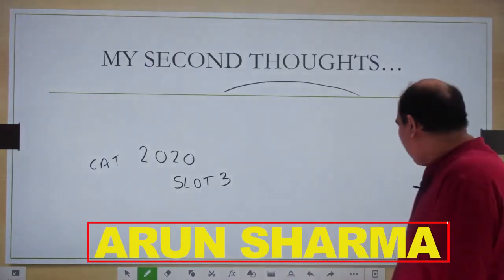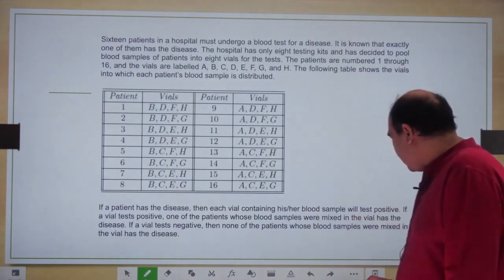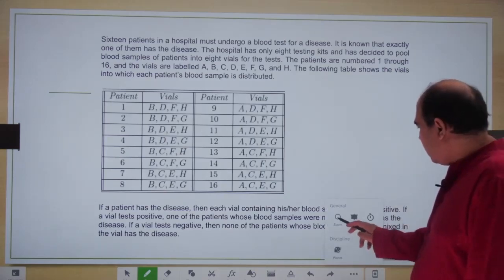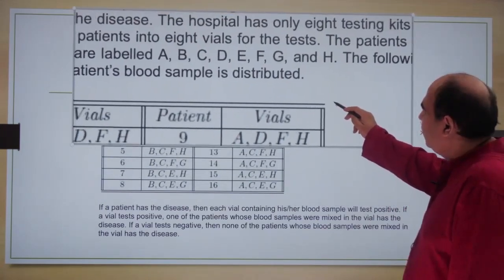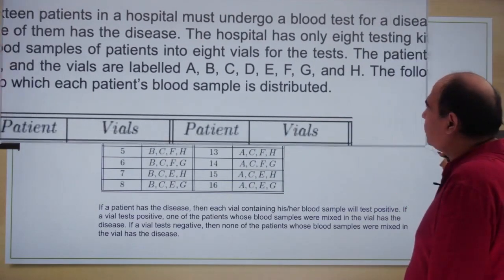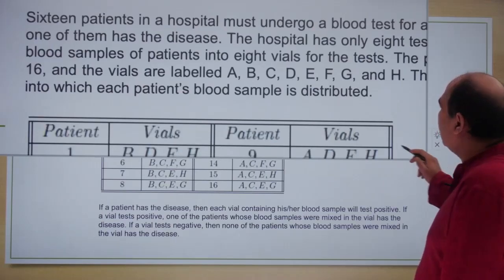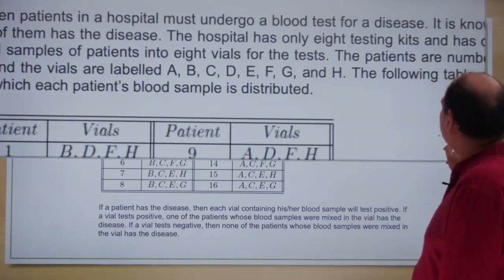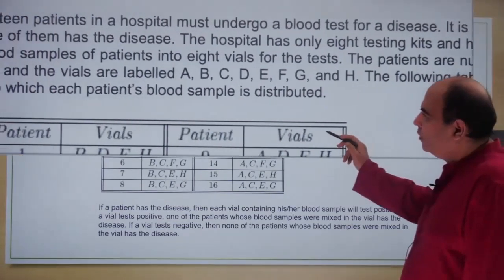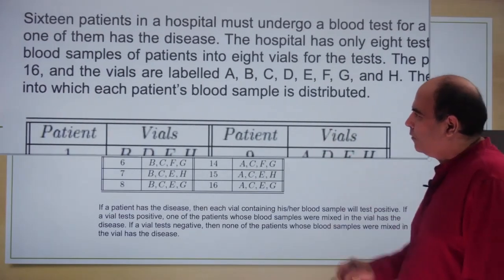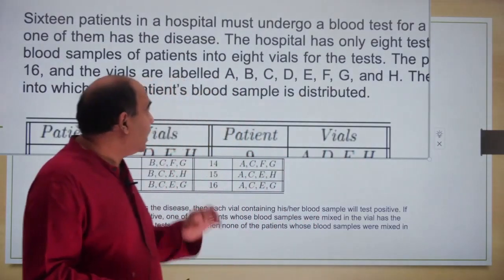I'm picking up a question from CAT 2020 Slot 3. It's a set with four questions. The question starts with: 16 patients in a hospital undergo a blood test for a disease. It is known that exactly one of them has the disease.